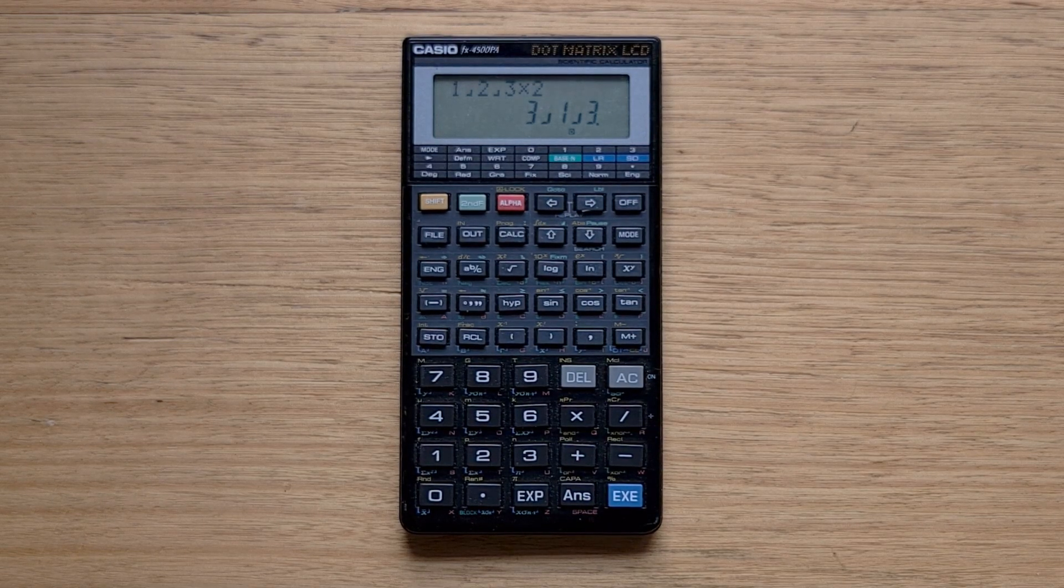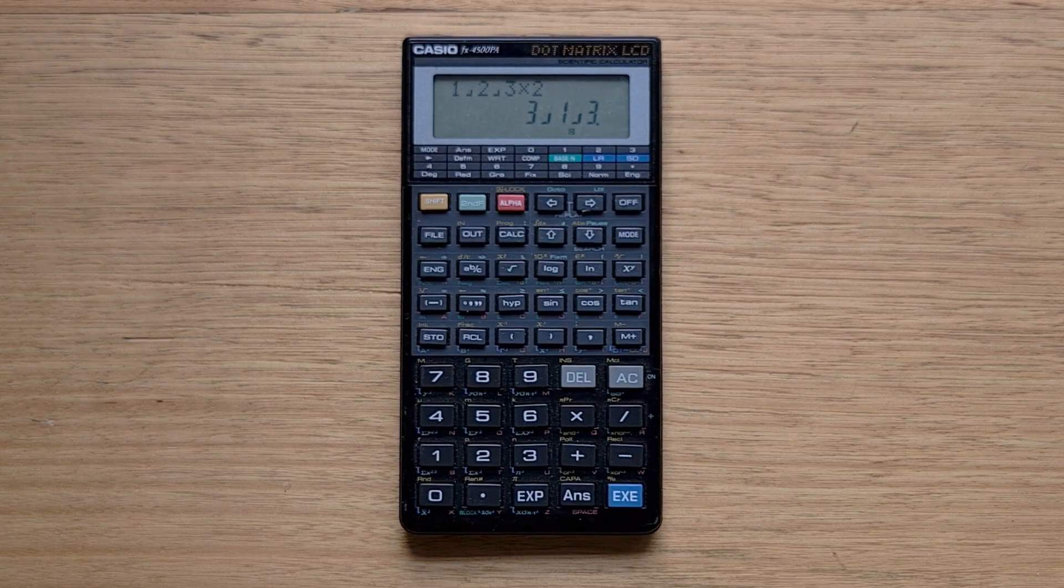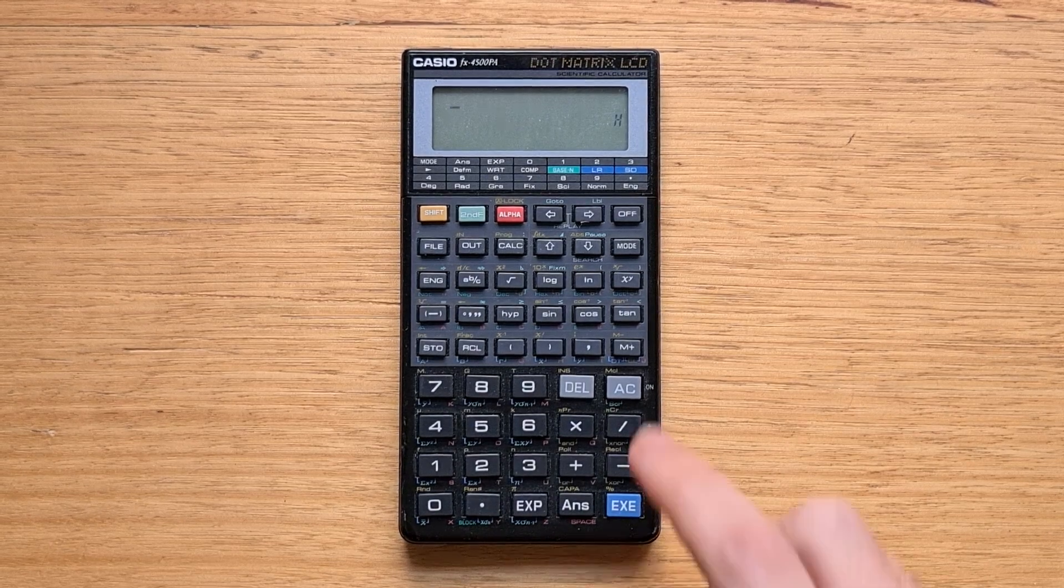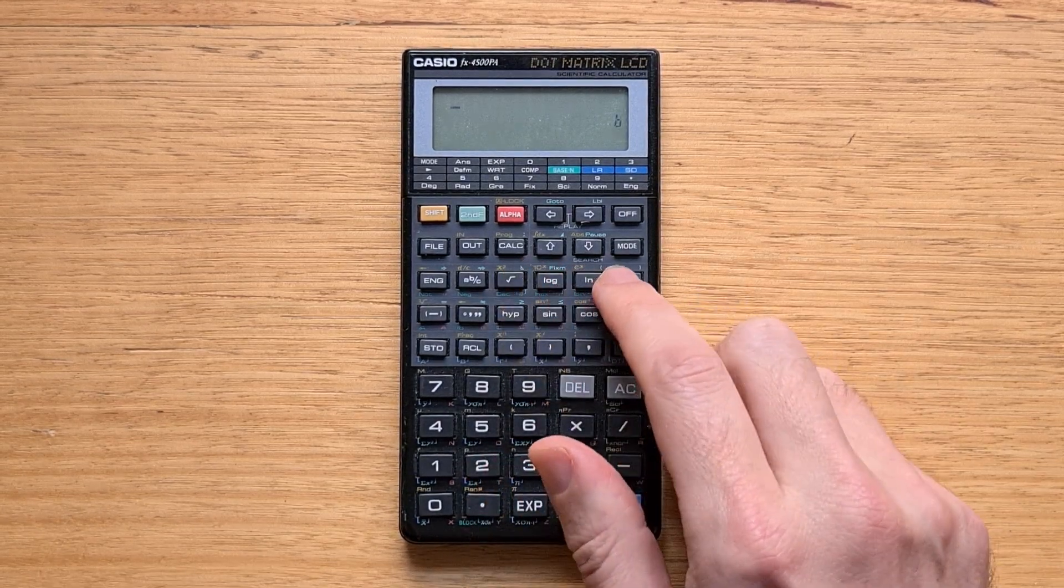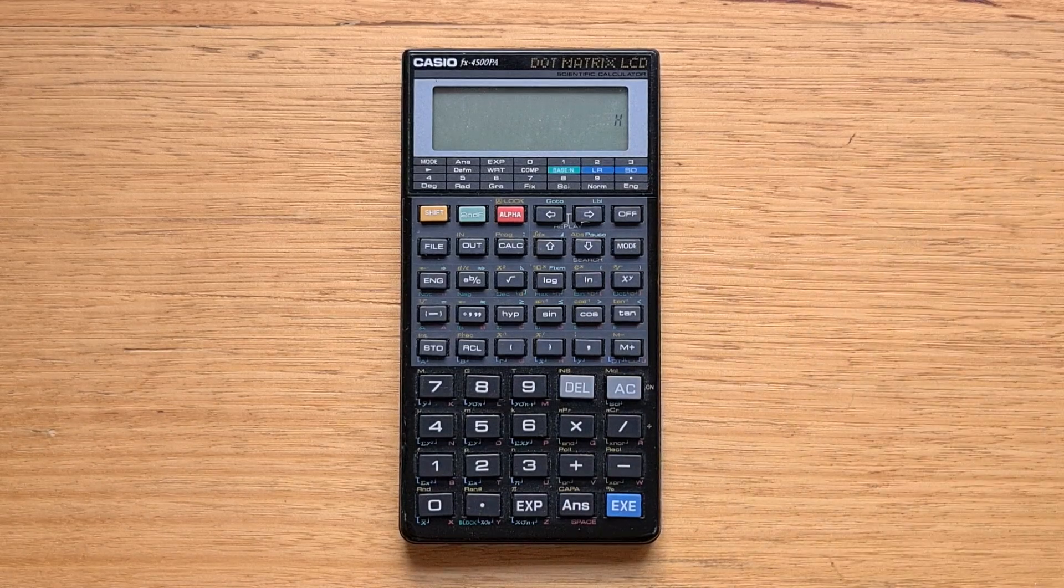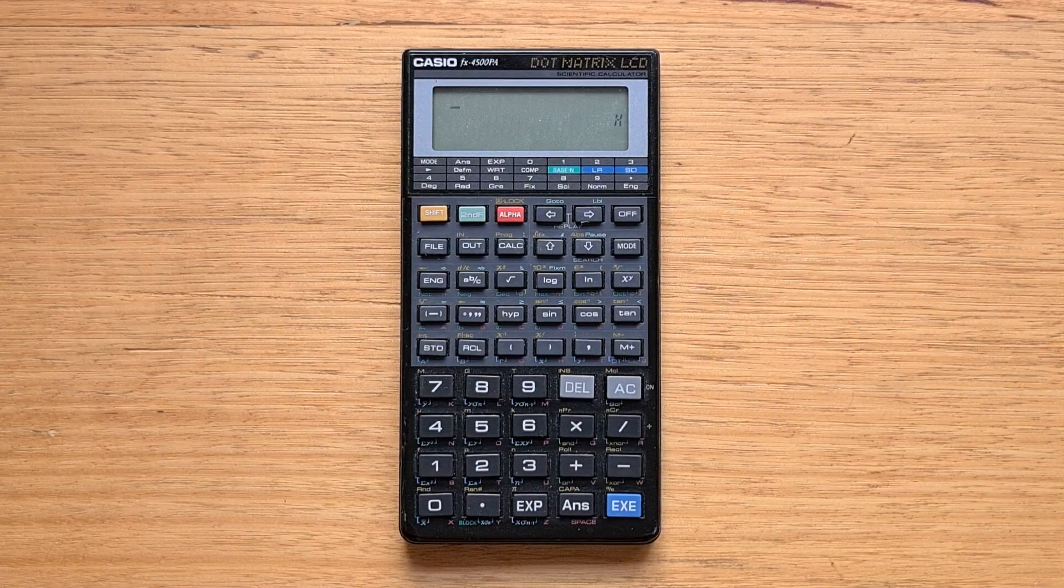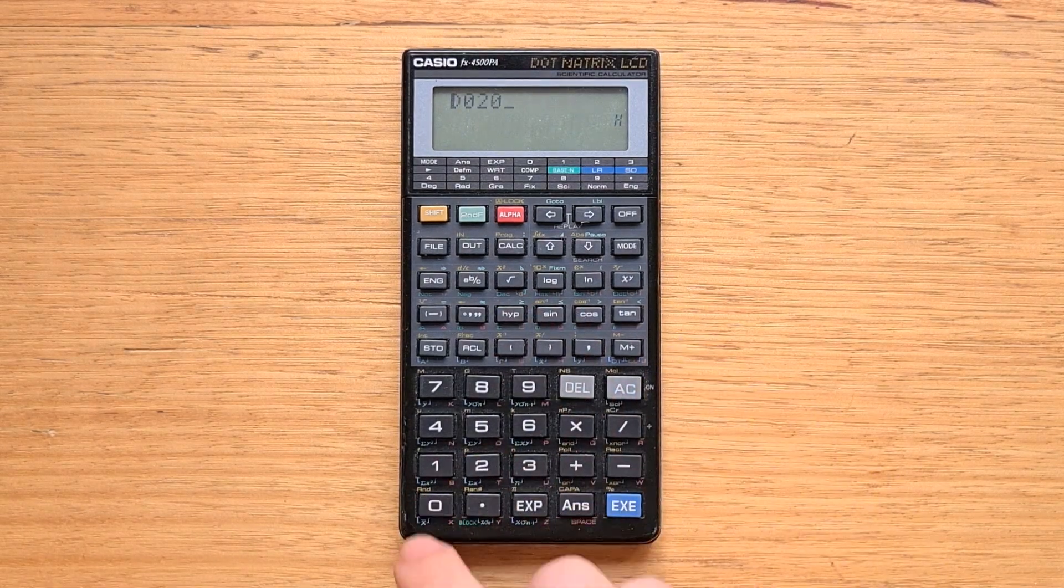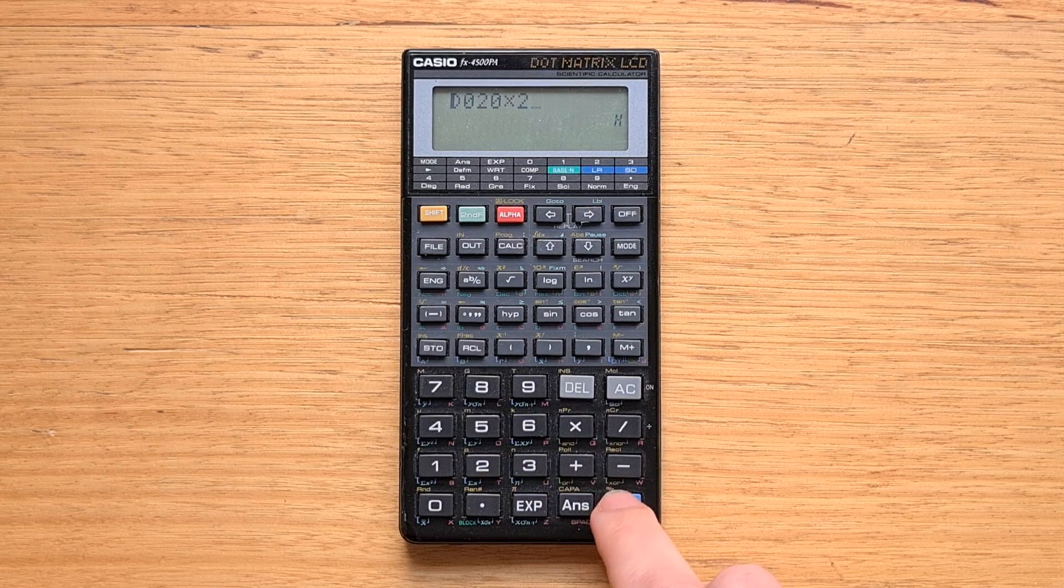The 4500P doesn't support complex numbers or vectors and matrices, but it does support numbers in different bases. Mode 1 is base-end mode, and we can switch bases using these four keys. The base is displayed on the right, so we're in hex mode.